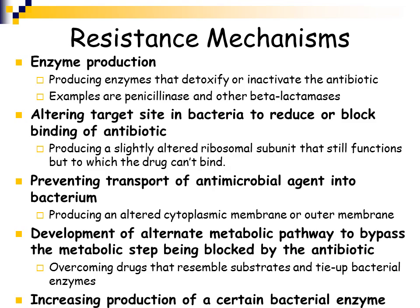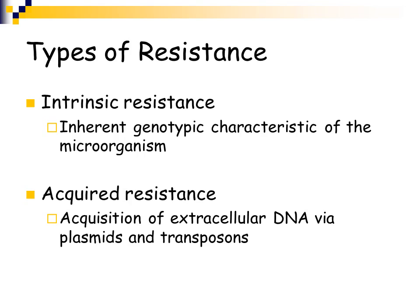Some bacteria will develop alternate metabolic pathways. If an antimicrobial agent targets a specific metabolic pathway, for example the folate synthesis pathway, if it's altered slightly, then those types of antimicrobial agents that use that pathway won't be effective. Some bacteria can increase the production of certain enzymes. The different types of resistance include intrinsic and acquired.